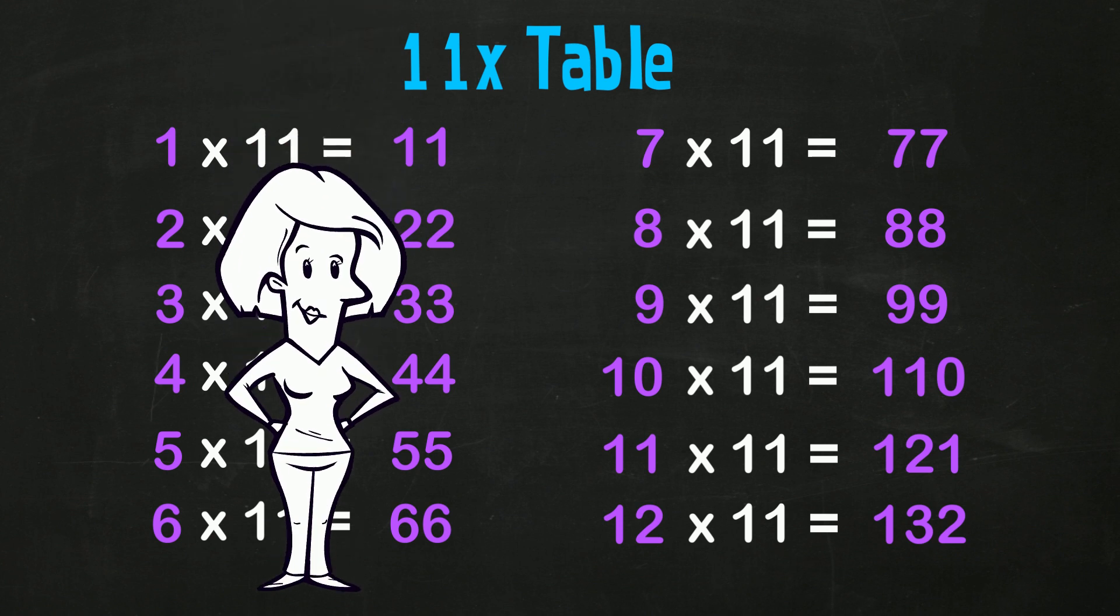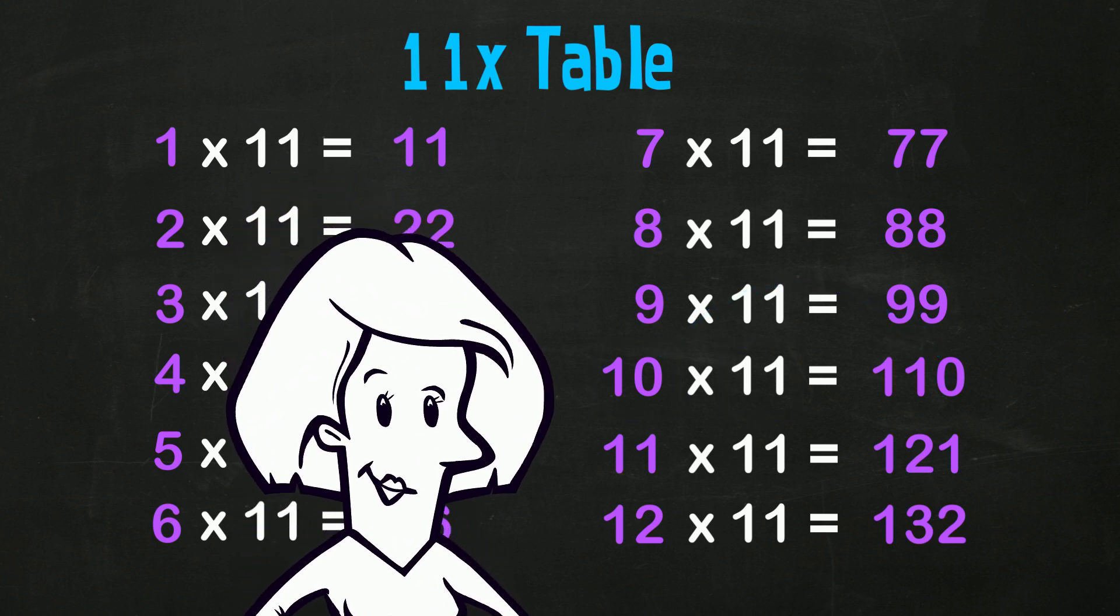I hope you like that as much as I do! From 1 to 9 is so easy, isn't it? 10 times any number is simple - you just stick a zero on the end, so that's easy too! The only ones where we have to use much brain power are 11 elevens and 12 elevens, and that's not much work at all!